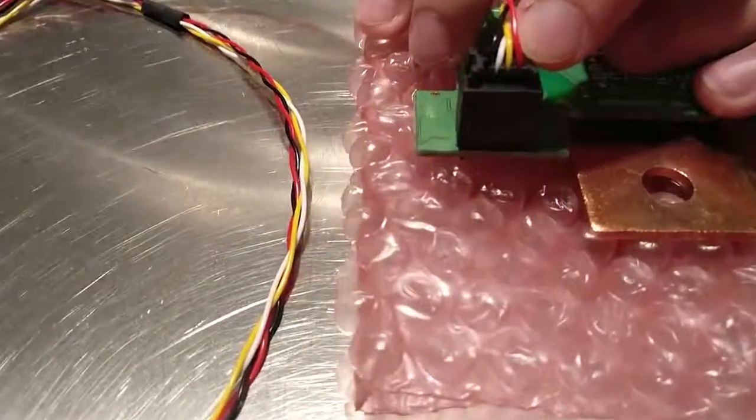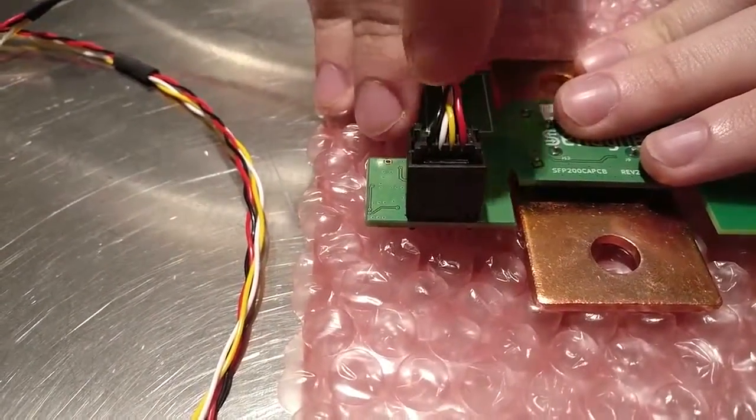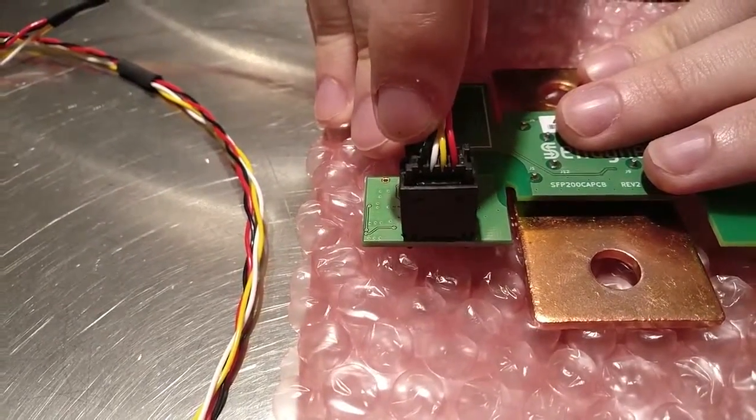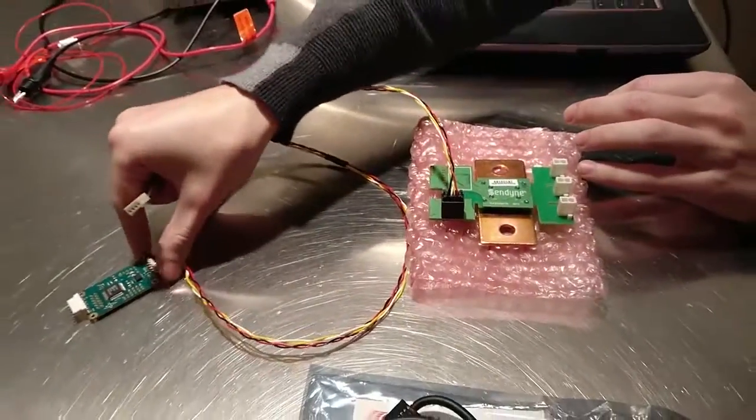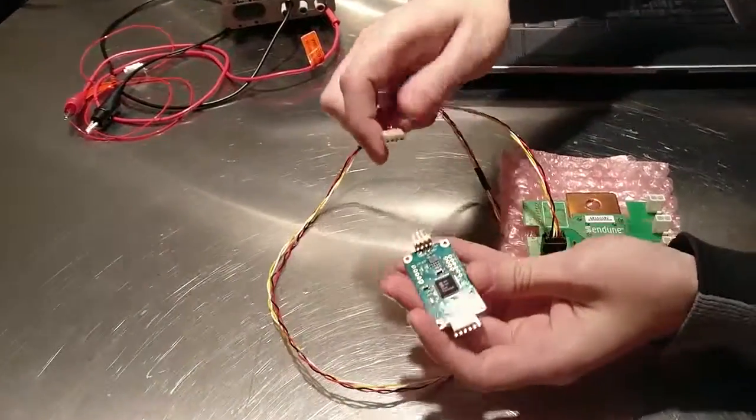Notice how black is on the left side and red is on the other side. Next, we take the cable and connect it to the SCD.